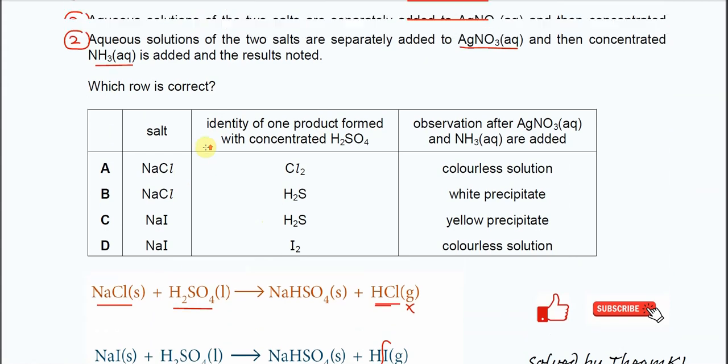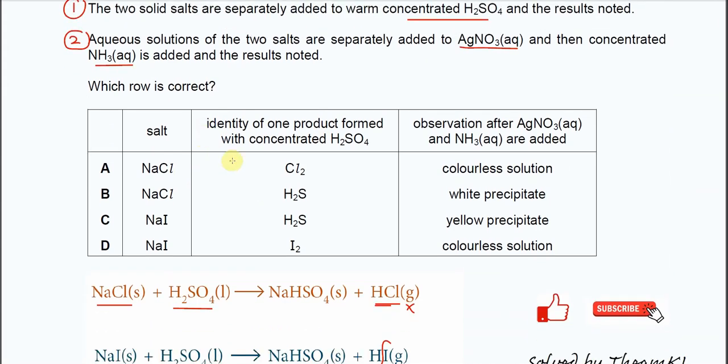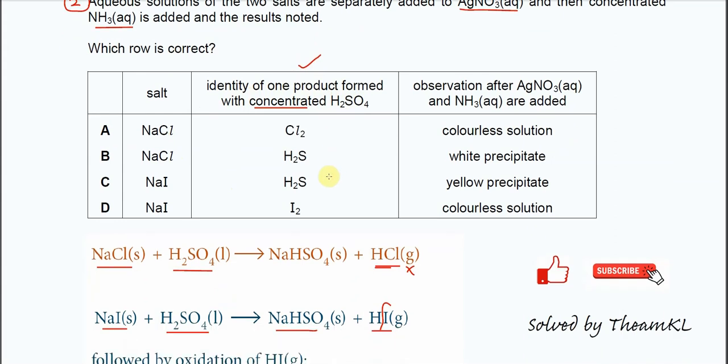Now let's go through the answer here, the first part. So which row is correct? For the first reaction, identity of one product formed with the concentrated H2SO4. As I told you just now, sodium chloride will not form chlorine, so there is no chlorine here. Sodium chloride cannot form H2S because the HCl will not further react with H2SO4. So the H2SO4 will not form H2S. Therefore answer is just C or D.